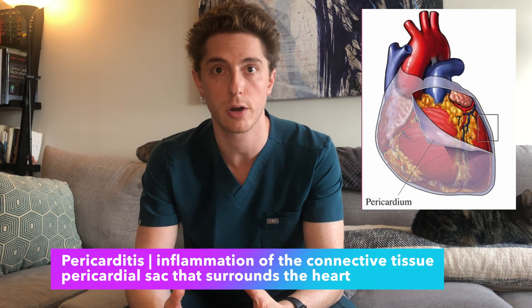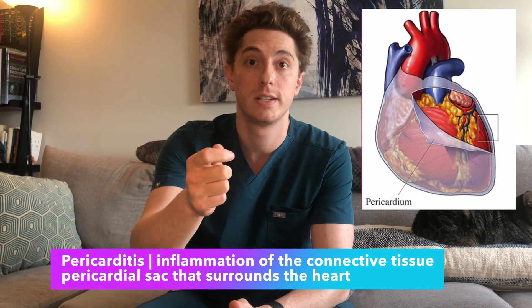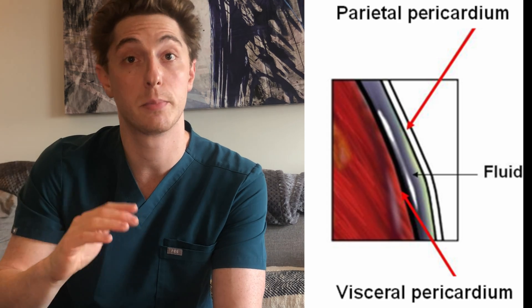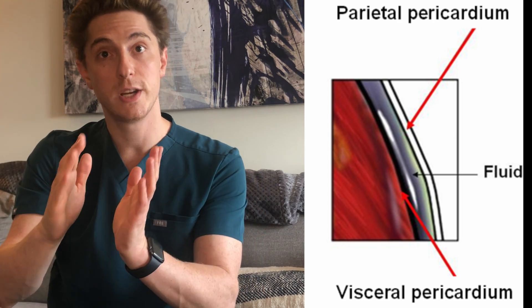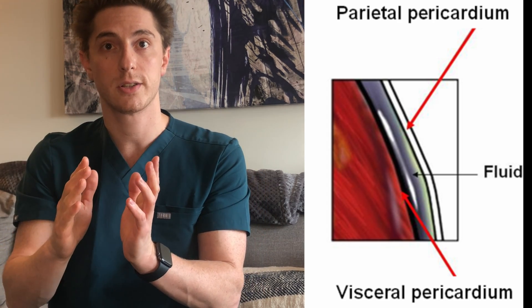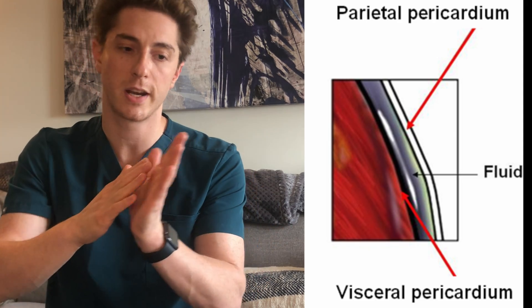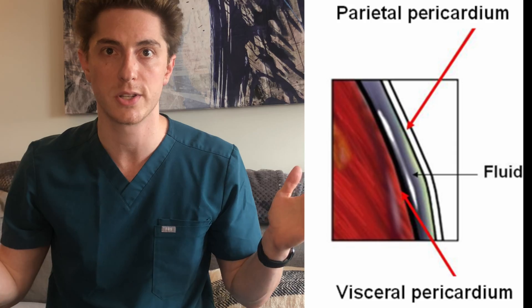Pericarditis is inflammation of the connective tissue pericardial sac that surrounds the heart. Day to day, most people don't realize that they even have a pericardium. There are two layers of the pericardium: the visceral pericardium that surrounds the heart, and the parietal pericardium. In between those two layers is normally about 15 to 50 milliliters of physiologic fluid that helps lubricate it so that we don't even notice it.